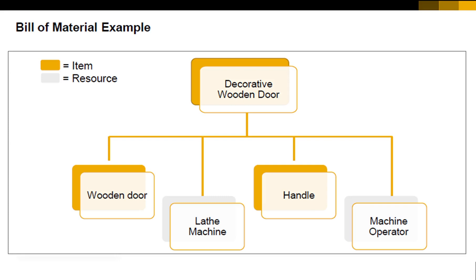In addition, we need to engrave a decoration pattern. To do this we need two resources: a lab machine and a machine operator employee. These items and resources combine to form the decorative wooden door Bill of Materials. In real life production, Bills of Materials often have several levels. In our example, the wooden door component can also have its own Bill of Materials.